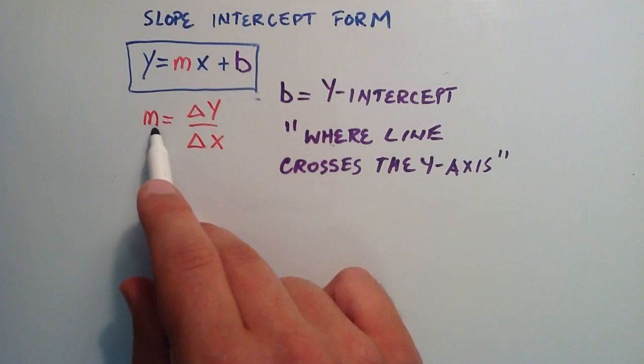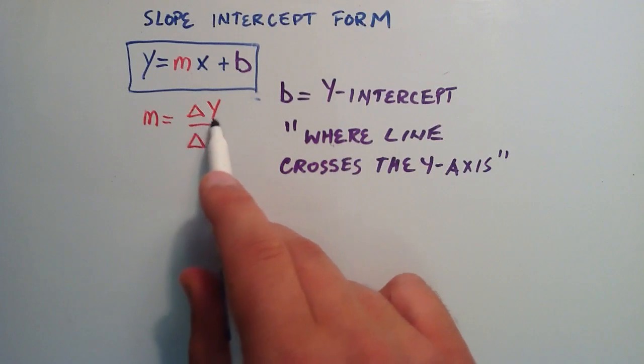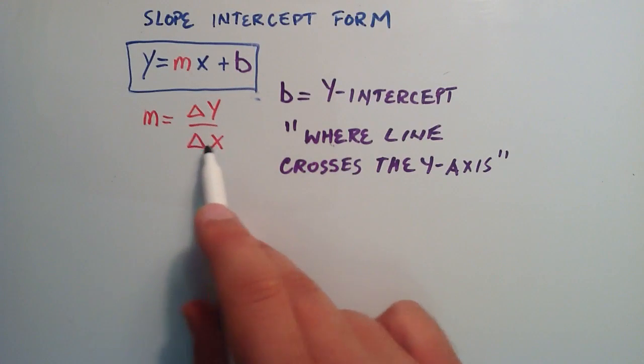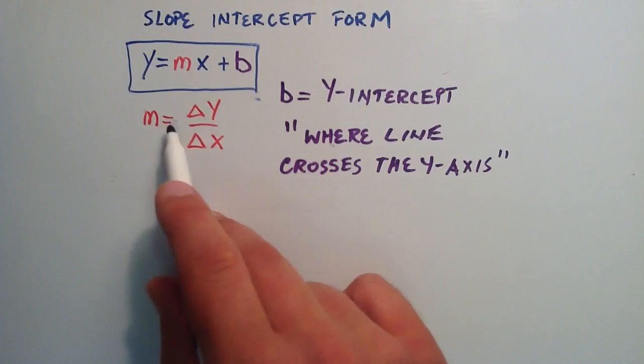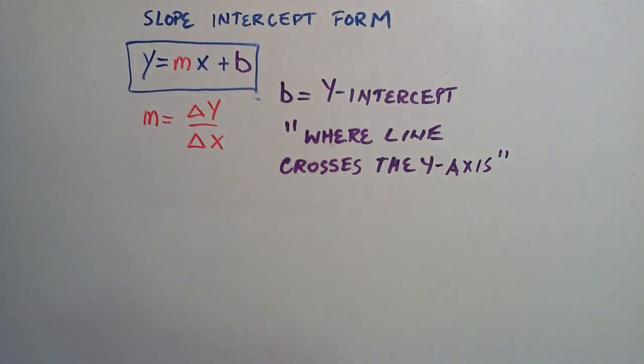The m in this equation is the slope, and the slope is equal to the change in y divided by the change in x. If you're unfamiliar with the slope, check out my video entitled What is the Slope of a Line?